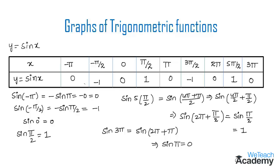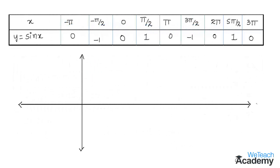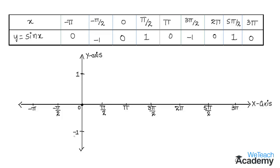Now let us plot the values of y corresponding to x on a graph. The horizontal line is the x-axis, the vertical line is the y-axis, and the origin is where they intersect. We mark the x values on the x-axis, and write 1 and -1 on the y-axis. For x = -π, y = 0, so the point lies on the x-axis.